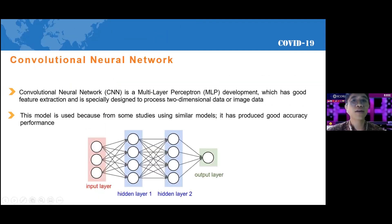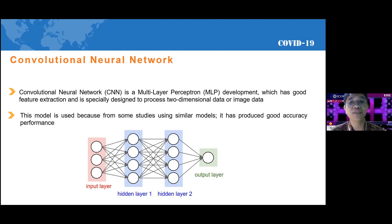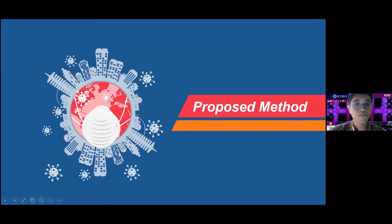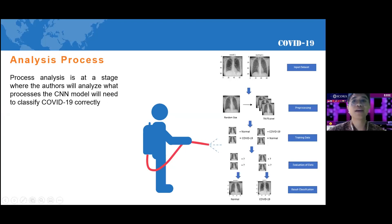To help with this problem, we need a good method for detecting and classifying X-ray images. In this study, deep learning is proposed for automatic diagnosing of COVID-19 using a convolutional neural network (CNN). CNN is a multi-layer perceptron development which has good feature extraction and is especially designed to process two-dimensional data or image data. This model is used because from similar studies it has shown good accuracy and performance.